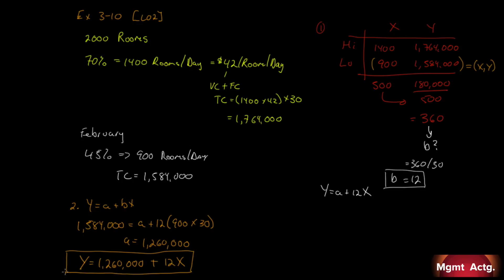Part 3. Assume that the occupancy rate increases to 50% during March. What total operating costs would you expect the company to incur during March? Well, that's easy enough, right? We're saying it increased to 50%. So, 50% of 2,000 is 1,000 rooms. 1,000 rooms per day. So, all we have to do is calculate y equals 1,260,000 plus 12 times 1,000 rooms per day for 30 days. This will amount to 360 plus the 1,260, we will get 1,620,000.